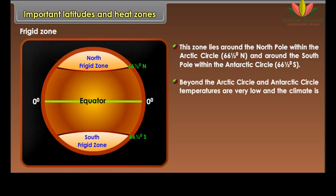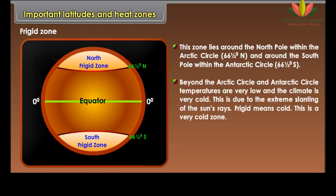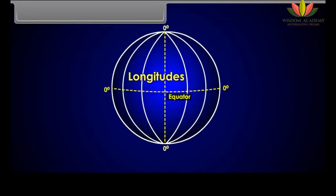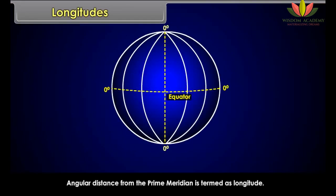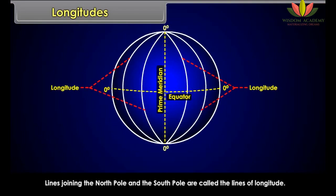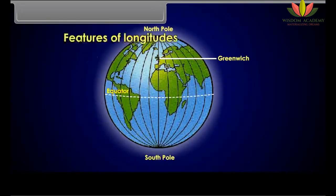Beyond the Arctic Circle and Antarctic Circle, temperatures are very low and the climate is very cold. This is due to the extreme slanting of the sun's rays. Frigid means cold — this is a very cold zone.